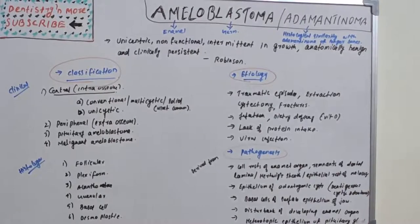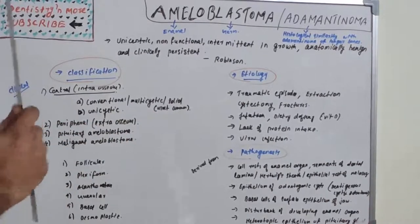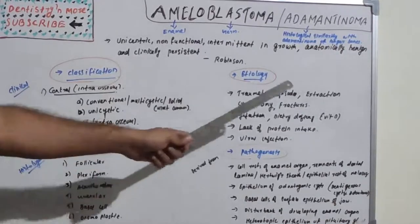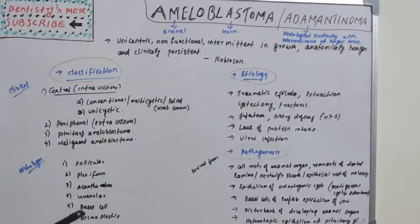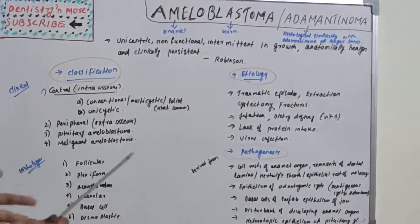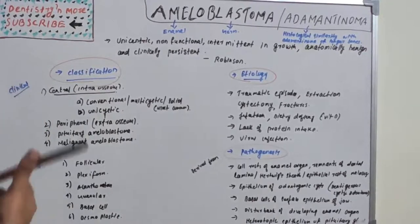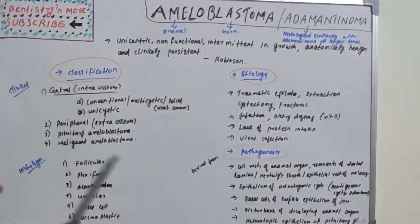Etiological factors for ameloblastoma include traumatic episodes — such as extraction, cystectomy, and various fractures — infection, dietary deficiency especially vitamin D, lack of protein intake, and viral infections. All these could be etiological factors.